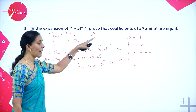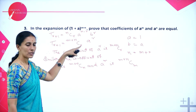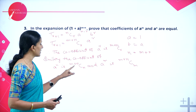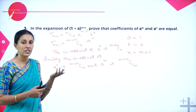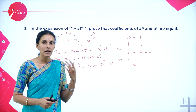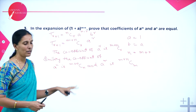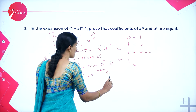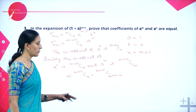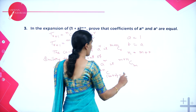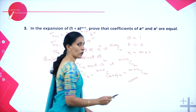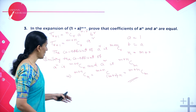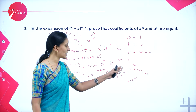Now (m+n)Cn represents selecting n terms out of m+n, which means rejecting m terms. Similarly, (m+n)Cm is selecting m terms, meaning rejecting n terms. These are one and the same. Therefore (m+n)Cn = (m+n)C(m+n-n) = (m+n)Cm. So the coefficients of a^m and a^n are equal.